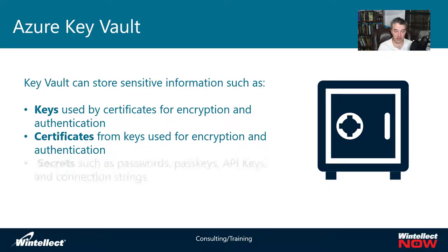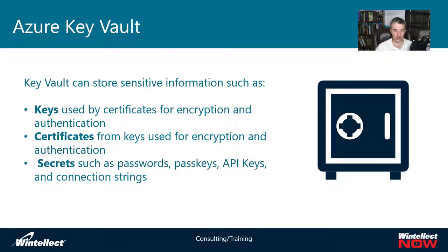The last kind of data you can store inside of a Key Vault is secrets. Secrets are things like passwords, pass keys, API keys, or connection strings — things you don't want to put into config files sitting on a file system in clear text. What is typically done is associating an identity with an application, such as a service principal on Azure or a managed identity. That identity is part of the environment, not encrypted inside the application itself, allowing the application to access Key Vault through the environment.